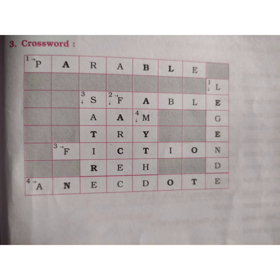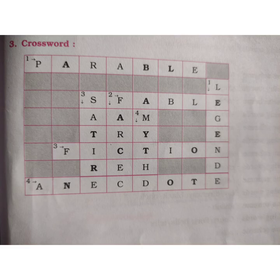The answers down: first, having historical base with characters that may not be true — legend. Second, exaggerated comedy — farce. Third, where vices and folly are ridiculed — satire. Fourth, originated in ancient time, authorship unknown — myth. Students, you need to practice more. Thank you.